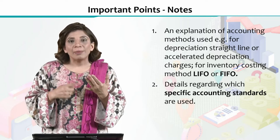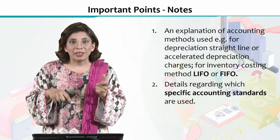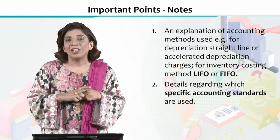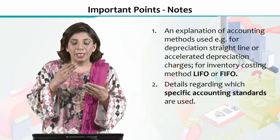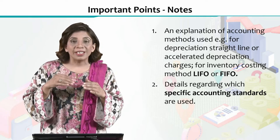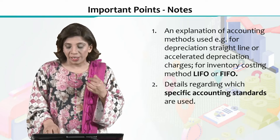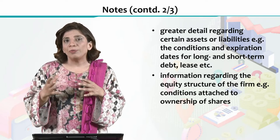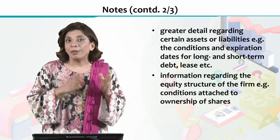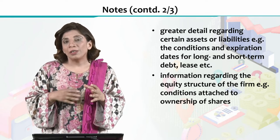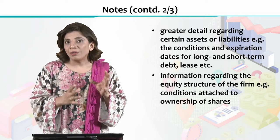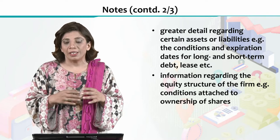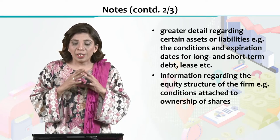In the notes, important points include, for example, which accounting method was used — Last In First Out (LIFO) or First In First Out (FIFO). This is mentioned in the notes so that anyone reading the financial statements knows which method was applied. Similarly, the notes tell you which specific accounting standards were used, because several standards vary from sector to sector and country to country. For example, in Pakistan, IFRS is used, but for Islamic banking, different standards apply since IFRS deals only with conventional business and not Sharia-compliant transactions.